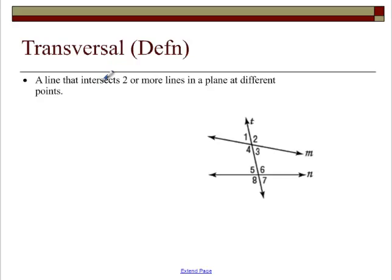A transversal is a line that crosses two other lines. Line T is a transversal because it crosses two lines. When you cross two lines, you get two sets of four angles. We're going to use those eight angles throughout this whole chapter. Angles one, two, three, four, five, six, seven, eight. I'm always going to try and number them in that order.